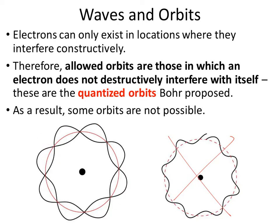As a result, you can see that if we increase or decrease the diameter of the circle using the same wavelength, it won't cause that full loop over — it will cause some destructive interference. Therefore, some orbits are just not possible.